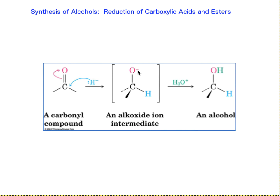Previously, we talked about how the only destiny is it becomes protonated to form an alcohol. But there's a second destiny that might occur on molecules that have a potential leaving group on this carbon. Aldehydes and ketones don't really have a leaving group — we've got carbon groups for a ketone, and those aren't just going to leave as negatively charged carbons. But when we deal with functional groups like carboxylic acids and esters, we do have potential leaving groups, and that second destiny is for the alkoxide to reform the carbonyl and kick out a leaving group.